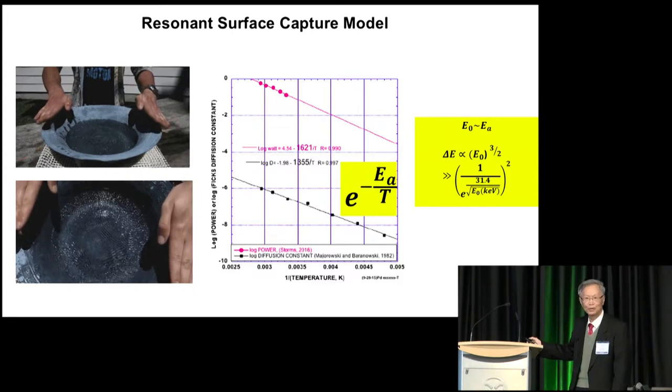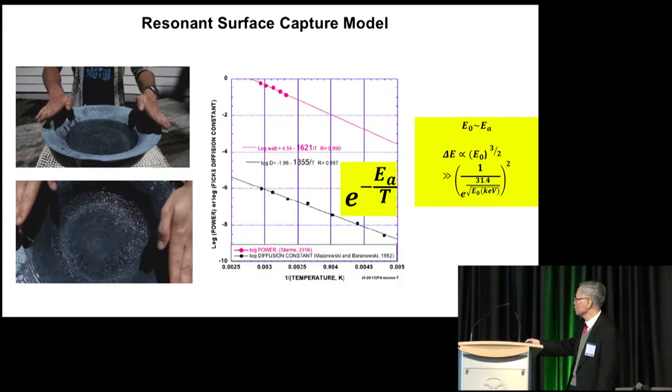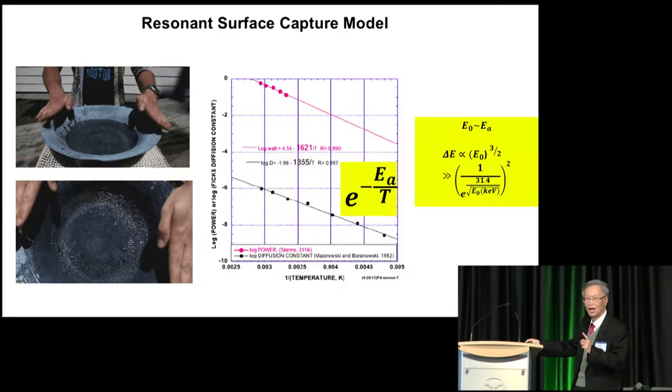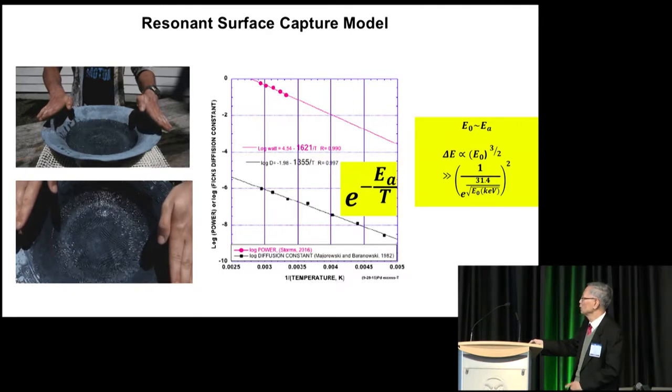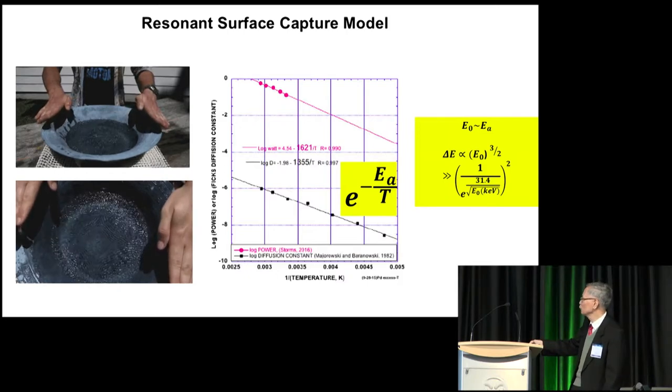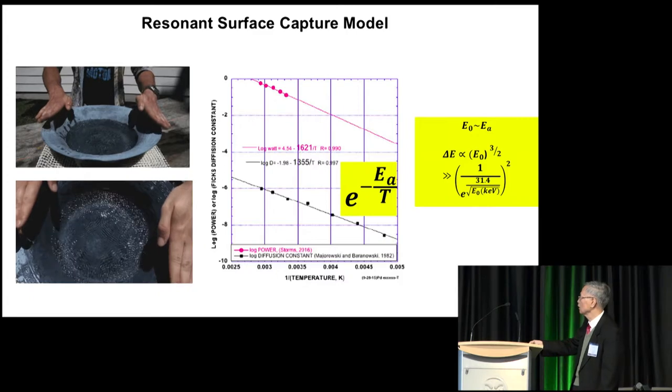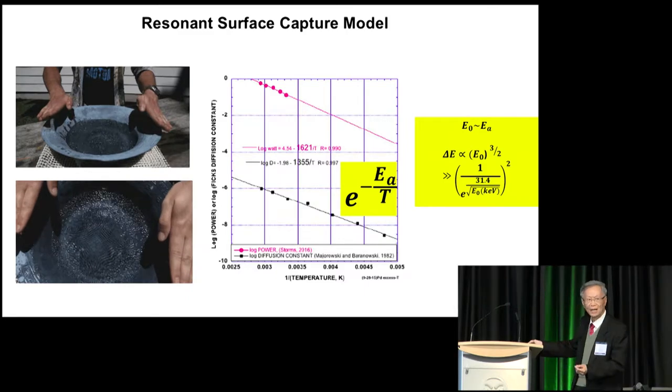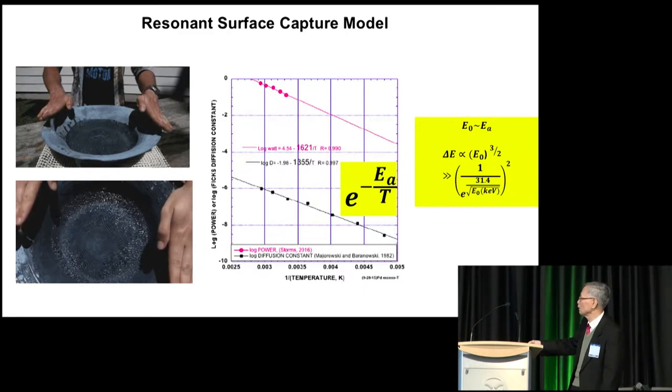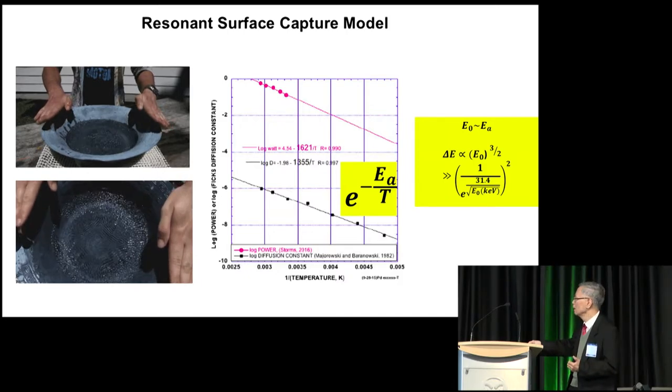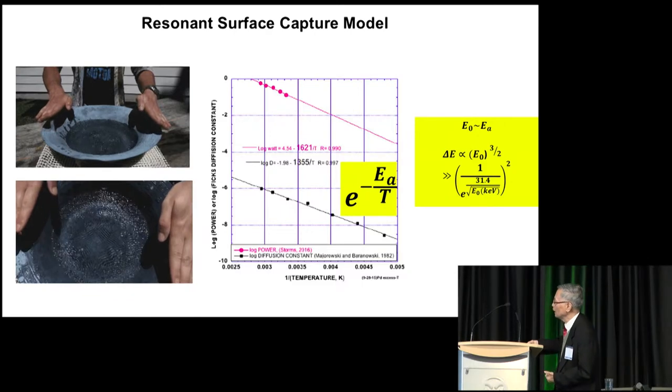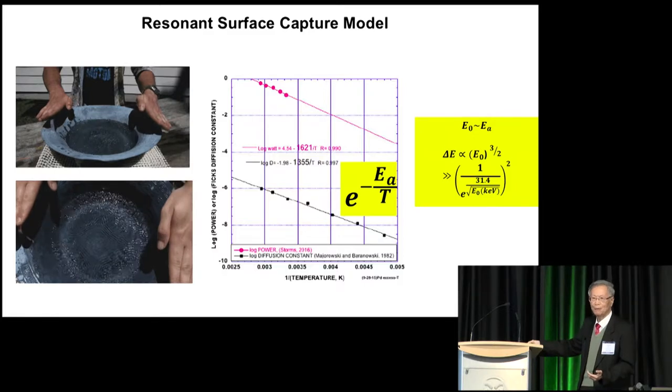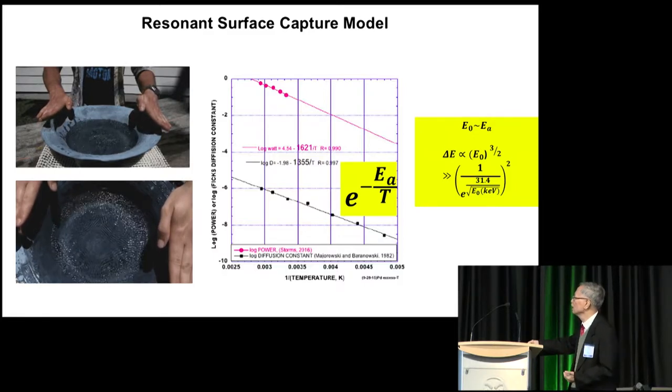The answer to both of these questions is yes. Ed Storm discovered this temperature dependence of excess heat power like a straight line. It's very similar to that of diffusion coefficient e to the minus activation energy over temperature. This is elastic collision, this is non-elastic collision. How do they connect each other? Because of the resonance. The elastic scattering makes the resonance fully developed. The resonance makes the deuteron wave function peak at the nuclear surface. Then it will be captured by the nuclear surface to release excess heat power.